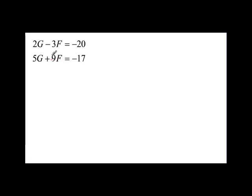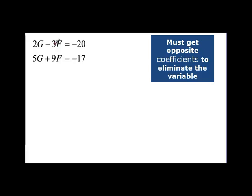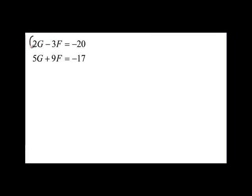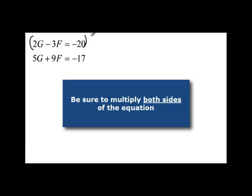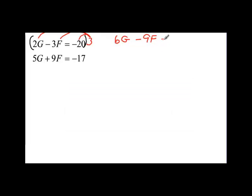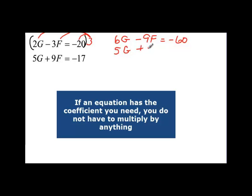In this first example, we can see that our f term has opposite signs on the coefficients, but the coefficients are not the same. If I multiply 3 by 3, I can get a 9. But if I'm going to multiply this term by 3, I have to multiply the whole equation by 3. So I have to multiply 2g times 3, which gives me 6g, and multiply negative 3f by 3, which gives me negative 9f, and also multiply negative 20 by 3, which gives me negative 60. The second equation I don't have to change because it already has the coefficient on f that I want, so I just rewrite that equation.